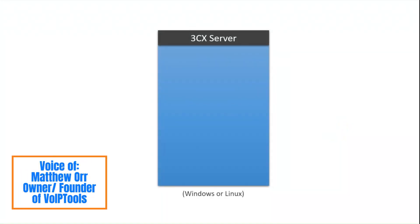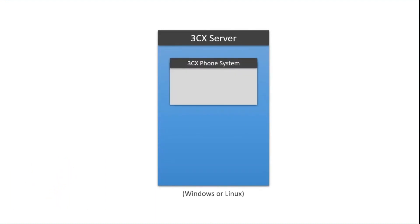We start out with a 3CX server — that can be Windows or Linux. On that server you're going to install the phone system. For the purposes of this discussion, the two pieces of 3CX that are important are the 3CX Call Control API, which allows you to communicate with the 3CX server, and the Call Flow Designer. Many of our applications take advantage of the capabilities of the Call Flow Designer.